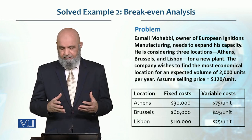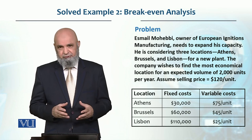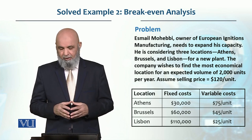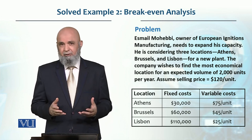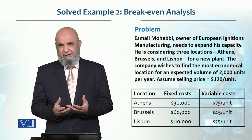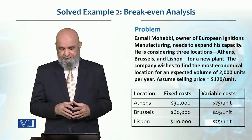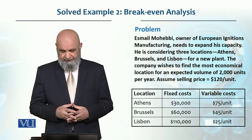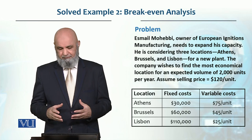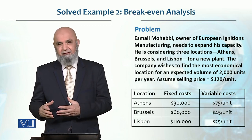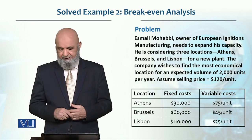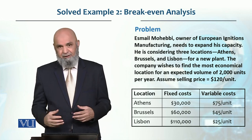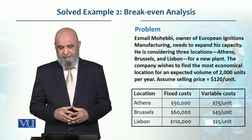The expected volume is 2,000 units, which we expect to sell every year, and the selling price is $120 per unit. The fixed cost and variable cost data: Athens has a $30,000 fixed cost and $75 per unit variable cost. Brussels has a $60,000 fixed cost but a lower variable cost of $45 per unit. Lisbon has a very high fixed cost of $110,000, but a very low variable cost of $25 per unit.